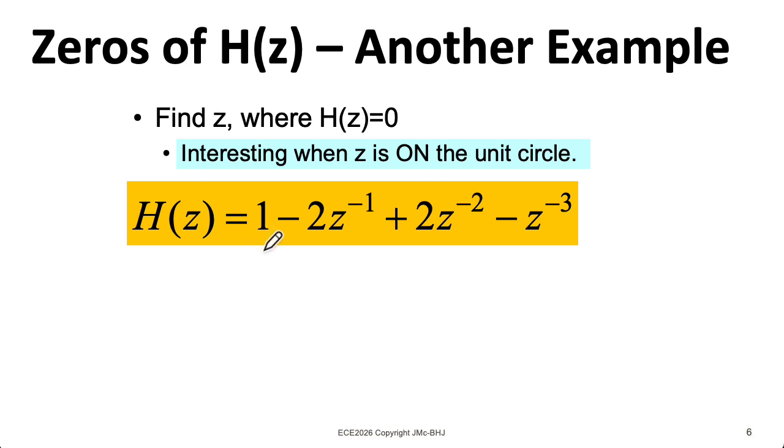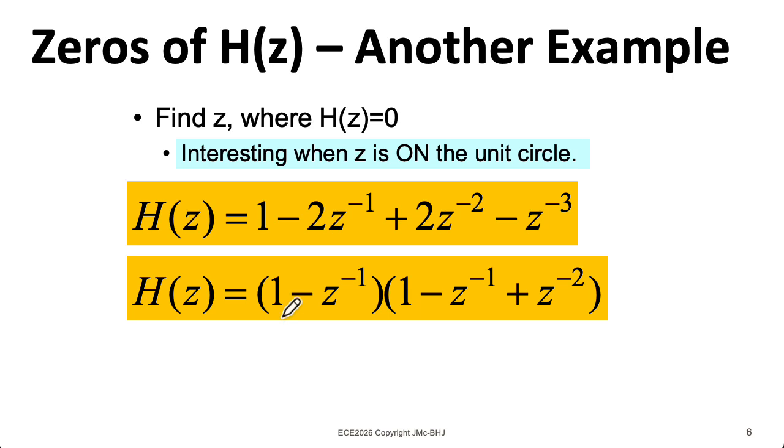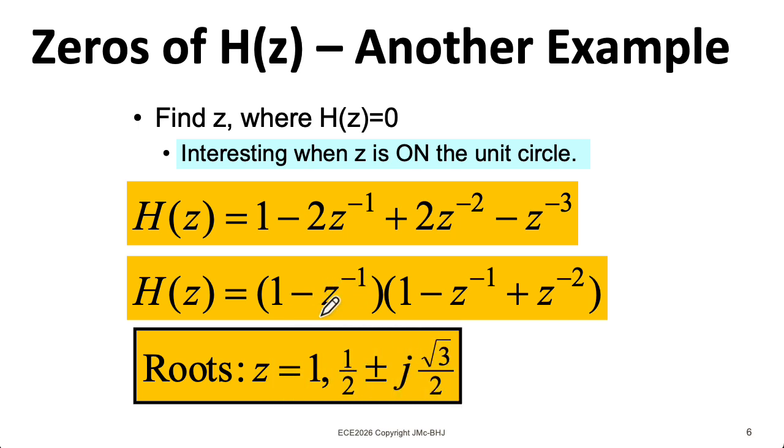Here I have an FIR filter with coefficients 1, minus 2, 2, minus 1. In general, factoring a cubic polynomial can be a pain, but this particular polynomial has a structure where we can factor it as 1 minus Z to the minus 1 times this polynomial here. So we have 1 zero at 1. If I plug in 1 here, this turns into 0. And then I can use the quadratic formula on this to find a couple of other zeros.